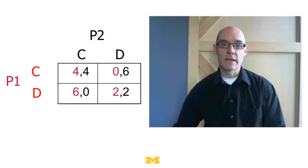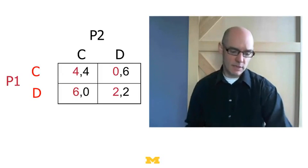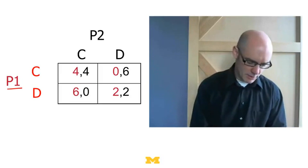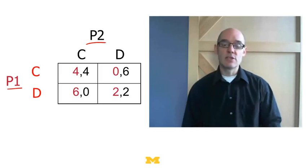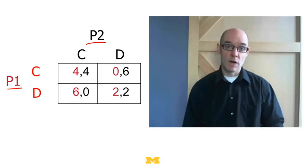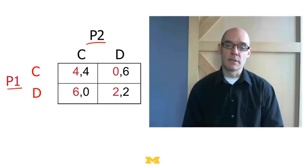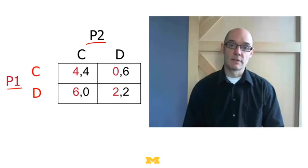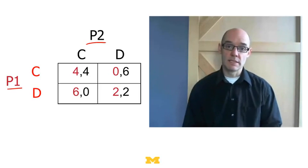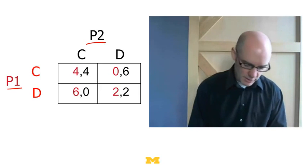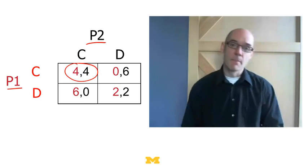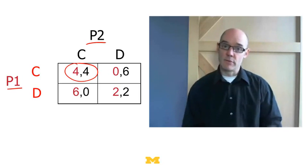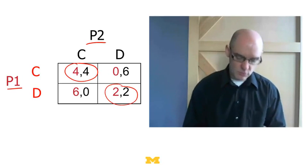The way you write that game is as follows. There are two players, player one and player two, and each has two options. They can either cooperate, which we represent by C, or they can defect, which we represent by D. If they both cooperate, they both get payoffs of four. And if they both defect, they get payoffs of two.